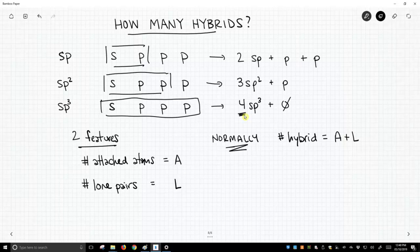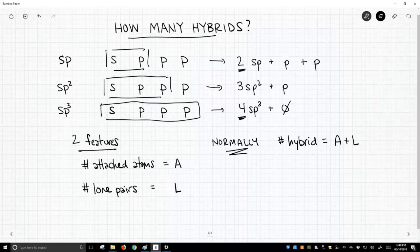If A plus L equals two, you only need two new hybrids. So this is what we'll look at. We'll count the number of attached atoms and lone pairs.